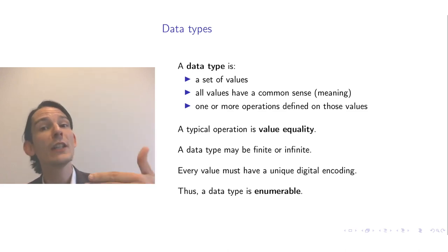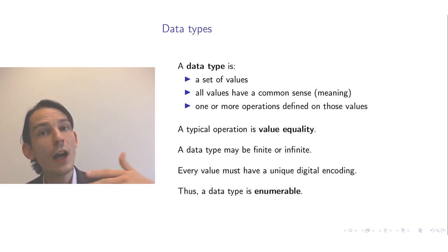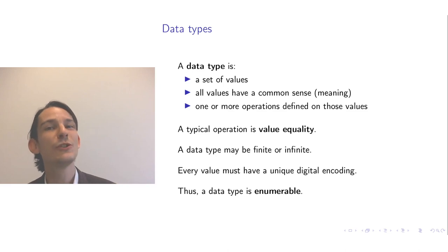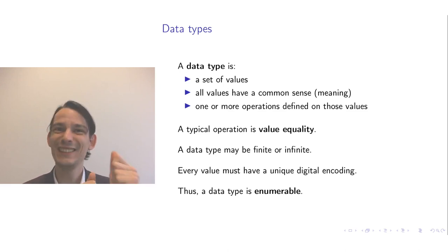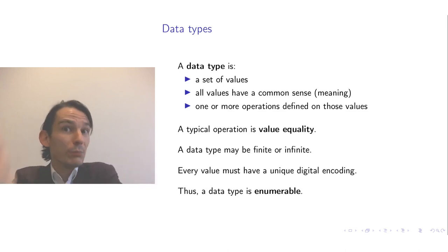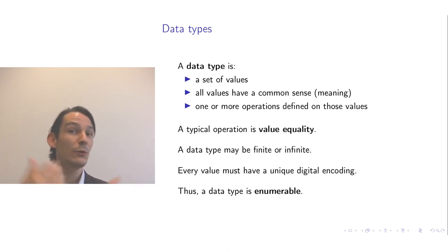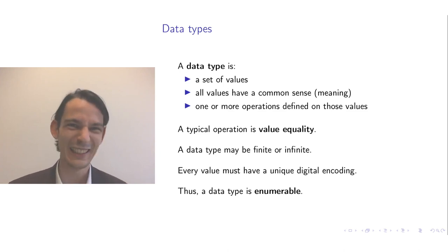You keep going — say, 0, 0, 0, 1, 1, 0, 1, 1 — and try out all possible sequences of zeros and ones. Since you can enumerate all those sequences, you can also enumerate all possible values of a data type, because they must be encoded as some finite sequence of zeros and ones that will eventually be enumerated. This is quite an abstract description of what a data type is.